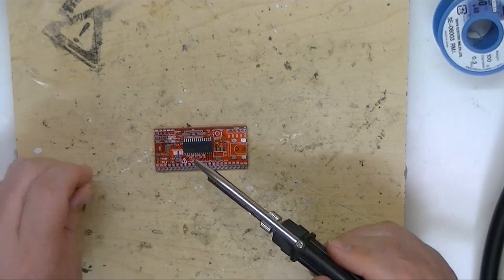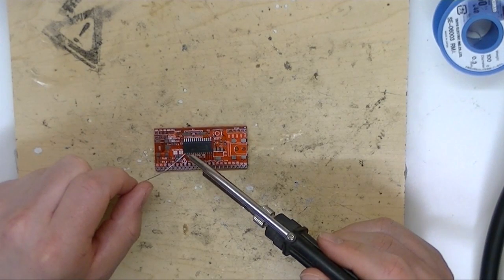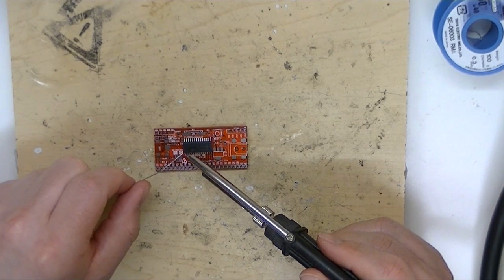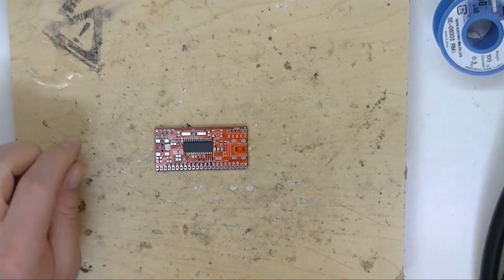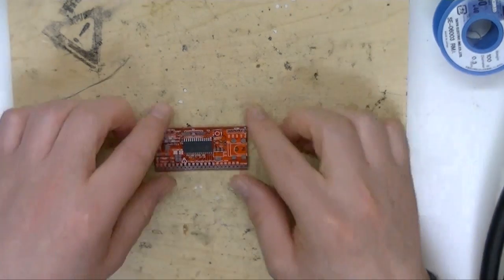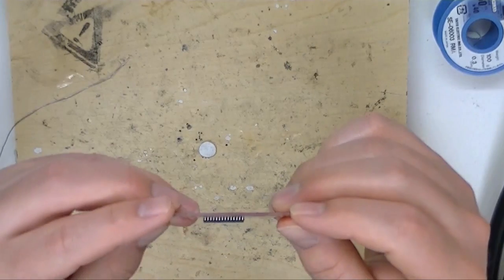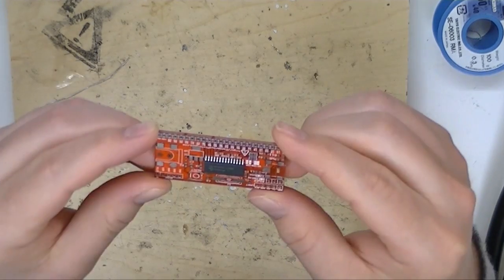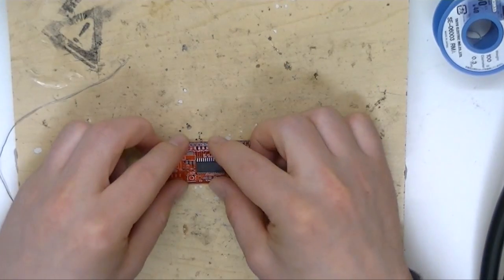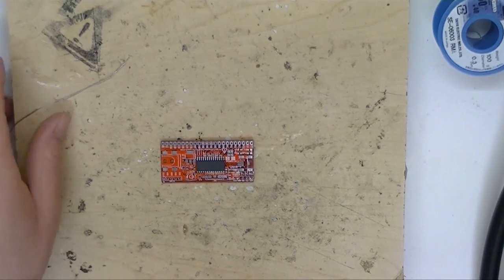Now we'll come in and do a pin on the opposite edge. And then check alignment just to make sure it didn't move around too much. Looks good. So we'll go ahead and solder the rest of the pins quickly.